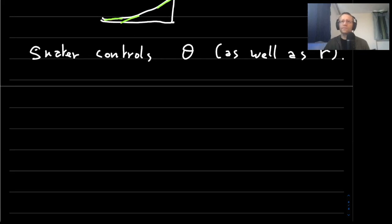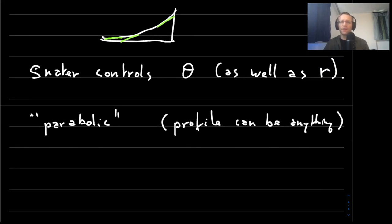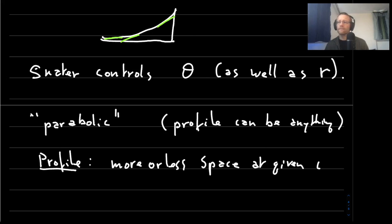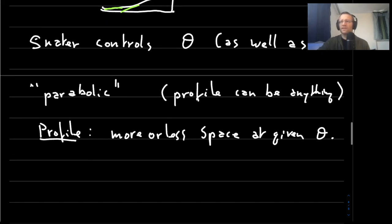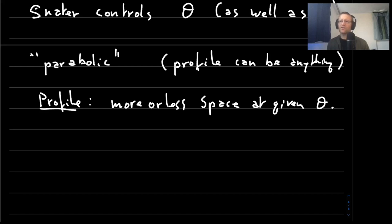Now these tracks are sometimes called parabolic because it resembles a little more parabola, but in fact the profile can be anything according to the rules of track building, so it's not necessarily a parabola. And the profile of the track is important because depending on the profile you have more or less space at the given angle theta. So the more space you have dedicated to a given angle theta, the more space you have dedicated to skaters that go at that velocity.